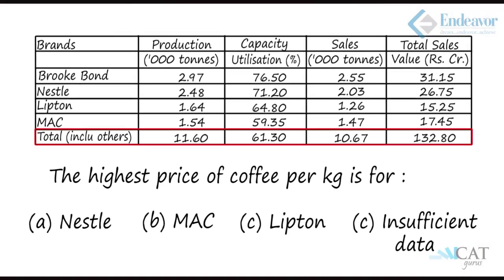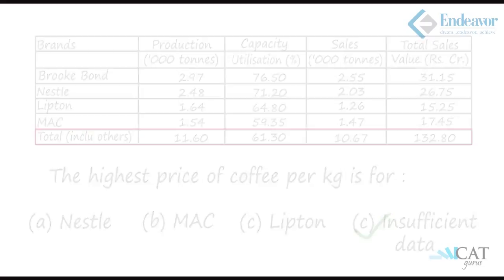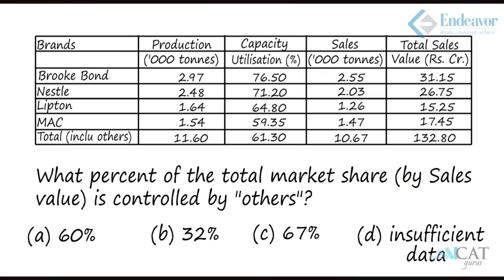Looking at the options, there is a choice called 'insufficient data.' Since we don't have values for the other companies, we cannot determine whether any of them has a higher price per kg. So 'insufficient data' is the correct answer here.